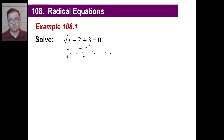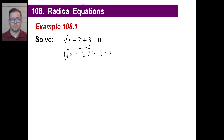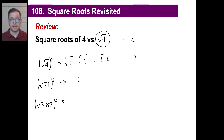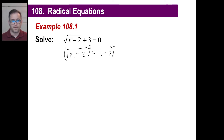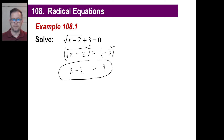So what we're going to do is isolate x. First, we move the 3 over to the right to get negative 3. On the left we just have x minus 2. To get rid of the radical sign, we square both sides. Since squaring a square root just gives you what's underneath the radical, the left becomes x minus 2. On the right, positive 3 times positive 3 is 9. Then we add 2 to both sides to get x equals 11.